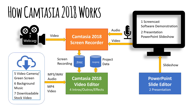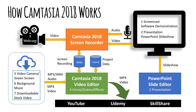Other sources you might bring in include an MP4 from a video camera, green screen footage, background music, or downloaded stock video images. You pull all of this into the video editor and blend it together, adding transitions, zooms, and effects until you get your finished video lecture. That finished lecture gets output as a simple MP4 file, which can be loaded on YouTube to share, or turned into a Udemy or Skillshare course.